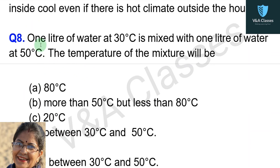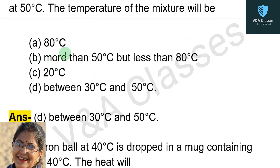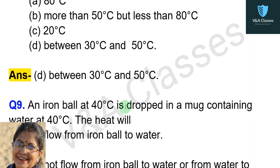Question number eight: one liter of water at 30 degrees Celsius is mixed with one liter of water at 50 degrees Celsius. The temperature of the mixture will be — option 1: 80 degrees Celsius; option 2: more than 50 but less than 80 degrees Celsius; option 3: 20 degrees Celsius; option 4: between 30 and 50 degrees Celsius. Answer: between 30 degrees Celsius and 50 degrees Celsius.